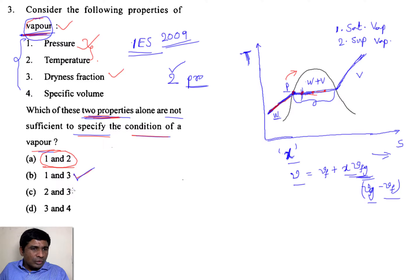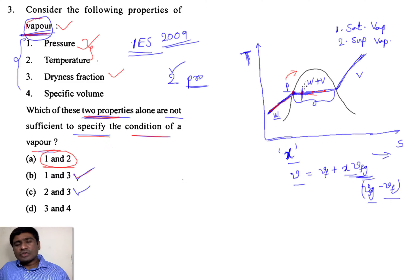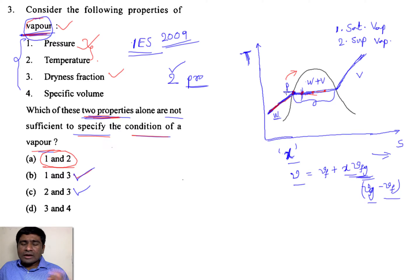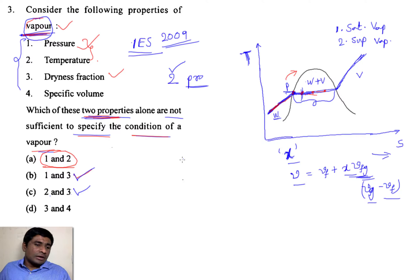What about properties 2 and 3 — temperature and dryness fraction? This is the same as the previous case. Either you know P or T, it is the same situation. If you know T, automatically you can calculate the corresponding saturation pressure, and vice versa. And again, if you know T and the dryness fraction, you can calculate all other variables at that particular state and identify it. You can do the analysis.